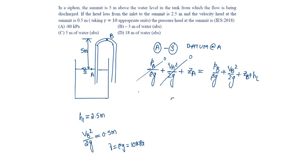This gives 0 = Pb/10 + 0.5 + Zb (5 meters) + head loss (2.5). Therefore, Pb equals minus 80 kilopascals.